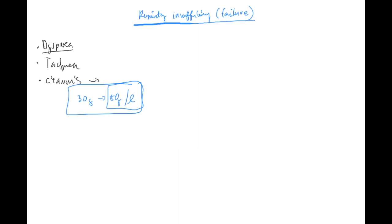Anxiety and tachycardia are other signs, but very unspecific. The first thing that should pop up to your mind is dyspnea. What about lab findings? What would you look for as a doctor when there's a problem with the respiratory system?